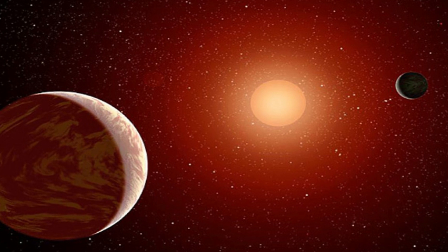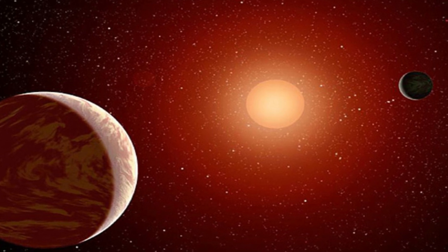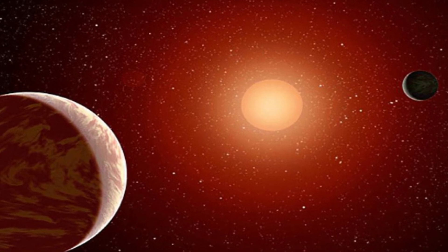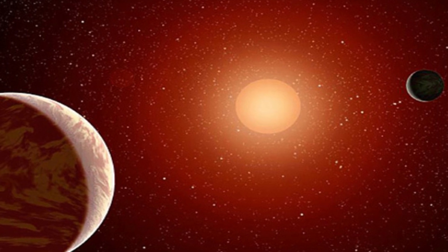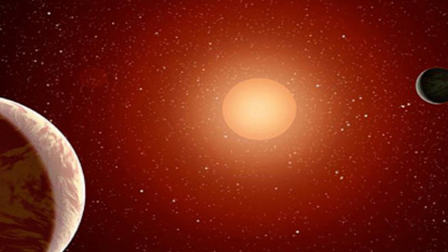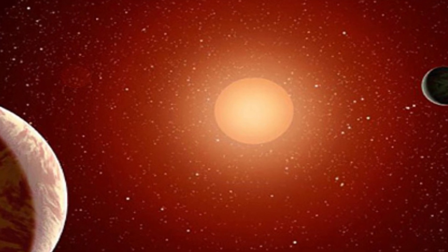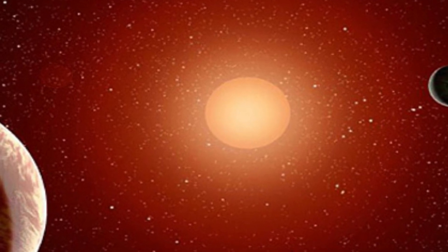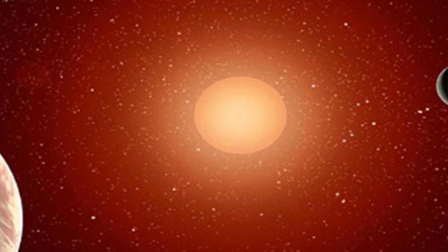Proxima b, which orbits Proxima Centauri just 4.25 light-years away, is about the same size as Earth and sits within the habitable zone of its star. This made the planet one of the most intriguing candidates for the search for alien life when it was discovered six years ago.